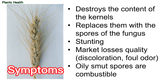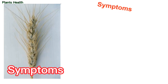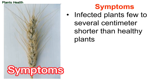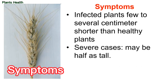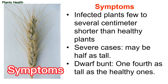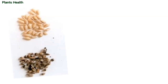As you can see in these figures, the glumes have spread out and the inside of the kernel is replaced by spores. Infected plants are a few to several centimeters shorter than healthy plants. In severe cases, plants may be half as tall, and in the case of Dwarf bunt, one-fourth as tall as healthy ones.